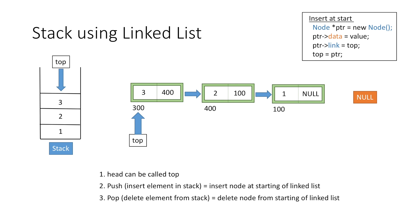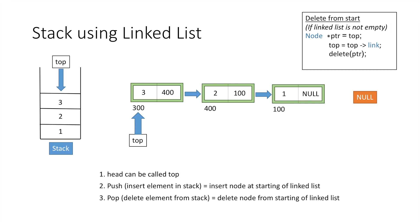For that we again take a temporary pointer ptr and equate it to top, so it points to the first element in the linked list. Then we move the top pointer to the next element in the linked list by equating it to the link part of the first element. And finally we delete the current node using the pointer ptr.